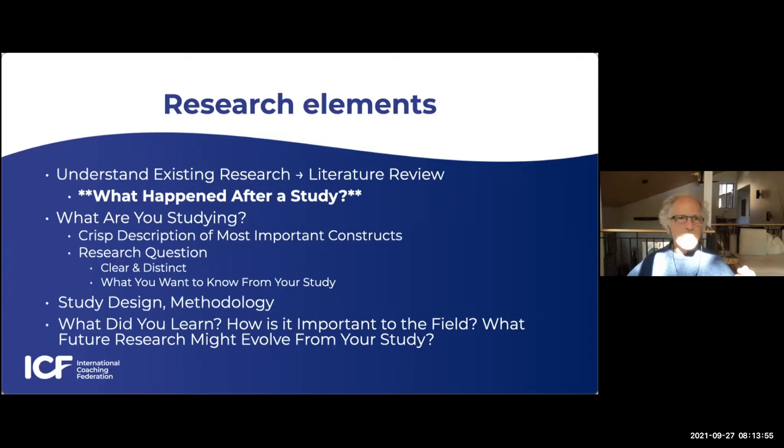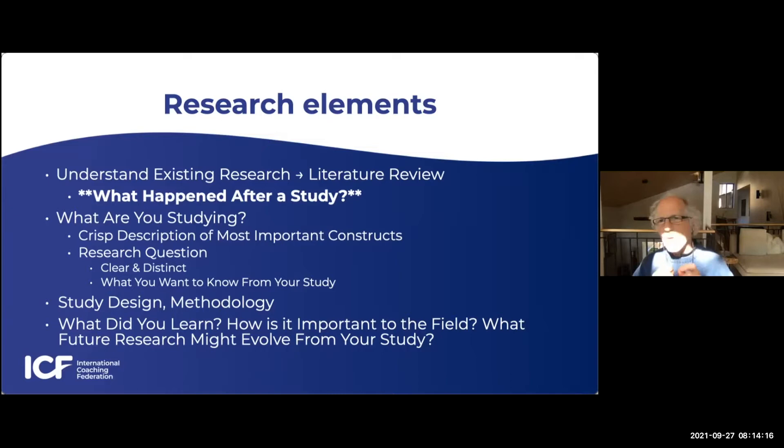Let's talk about the different elements. The first thing you do is understand what exists — that's called the literature review. And as you do a literature review, one of the most important things — I've bolded it and put asterisks around this — is to find out what happened after a study. I'll give you an example: Barbara Fredrickson, the positivity ratio.